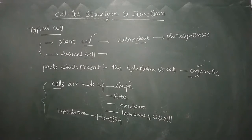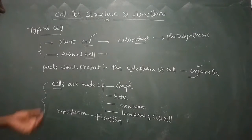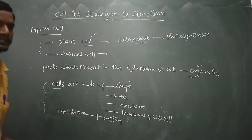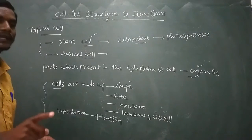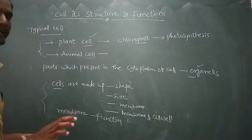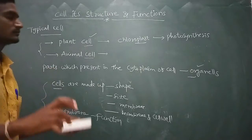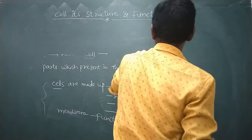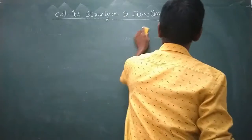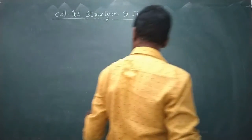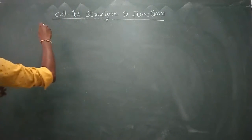Now it is time to discuss the cell membrane. We already did an activity in eighth class — we observed the cell membrane using an onion and also observed cells in the cheek. Now we are observing the cells of a plant.